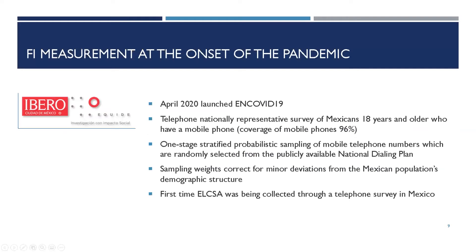A group of researchers led by the Research Center for Equitable Development, EQUIDE, at Universidad Iberoamericana decided to fill this gap of information really early on in the pandemic. In April 2020, we launched the ENCOVID-19 survey — a telephone national representative survey of Mexican adults who have a mobile phone. It's a good sampling frame because in Mexico the coverage of mobile phones is close to 96%. The survey used one-stage stratified probabilistic sampling of mobile telephone, and our sampling frame was the national dialing plan — a pretty robust framework. We used sampling weights to correct for minor deviations from the Mexican population demographic structure using census data.